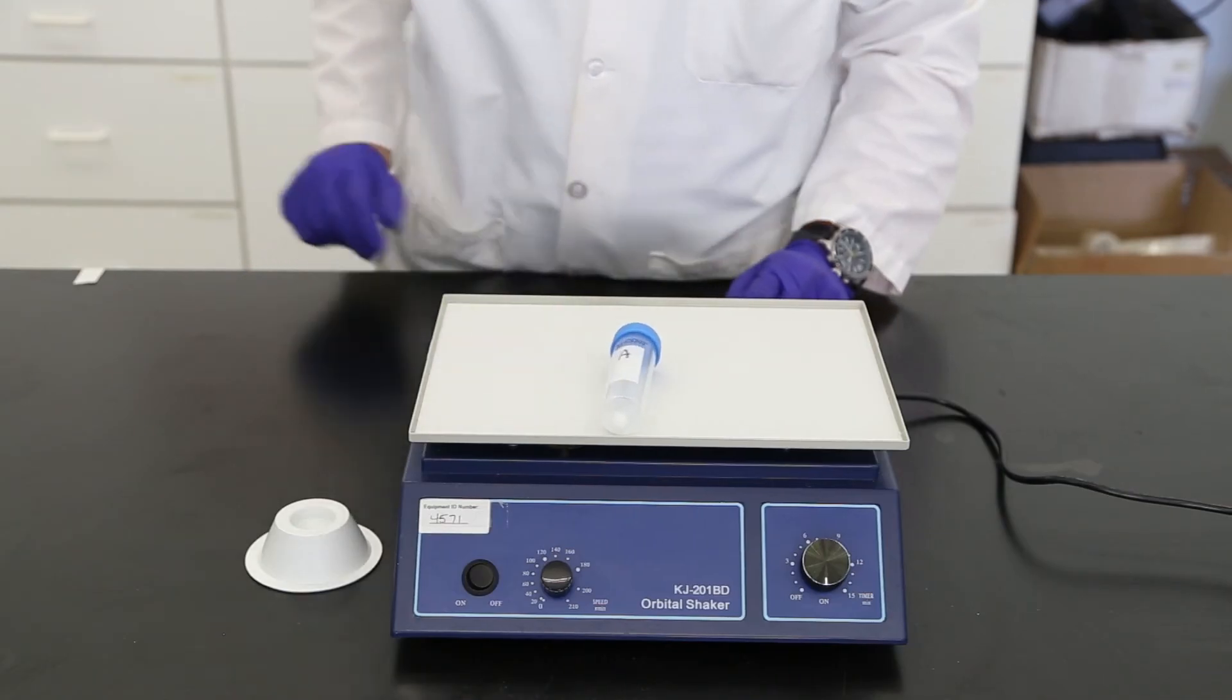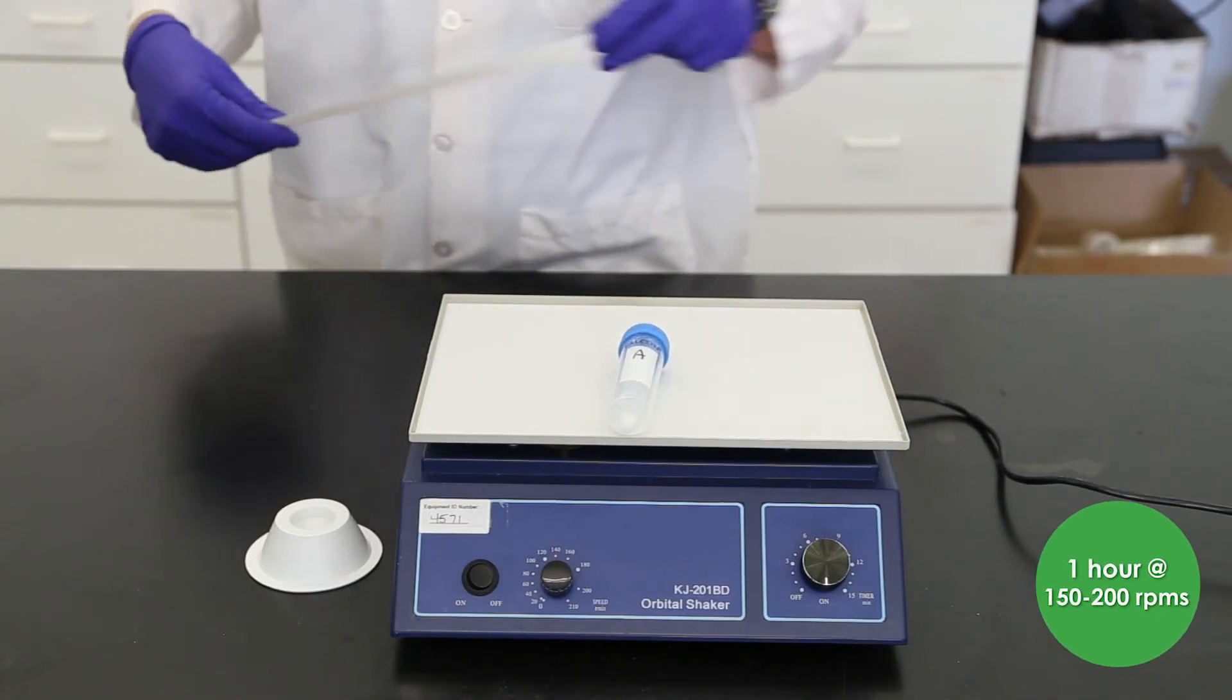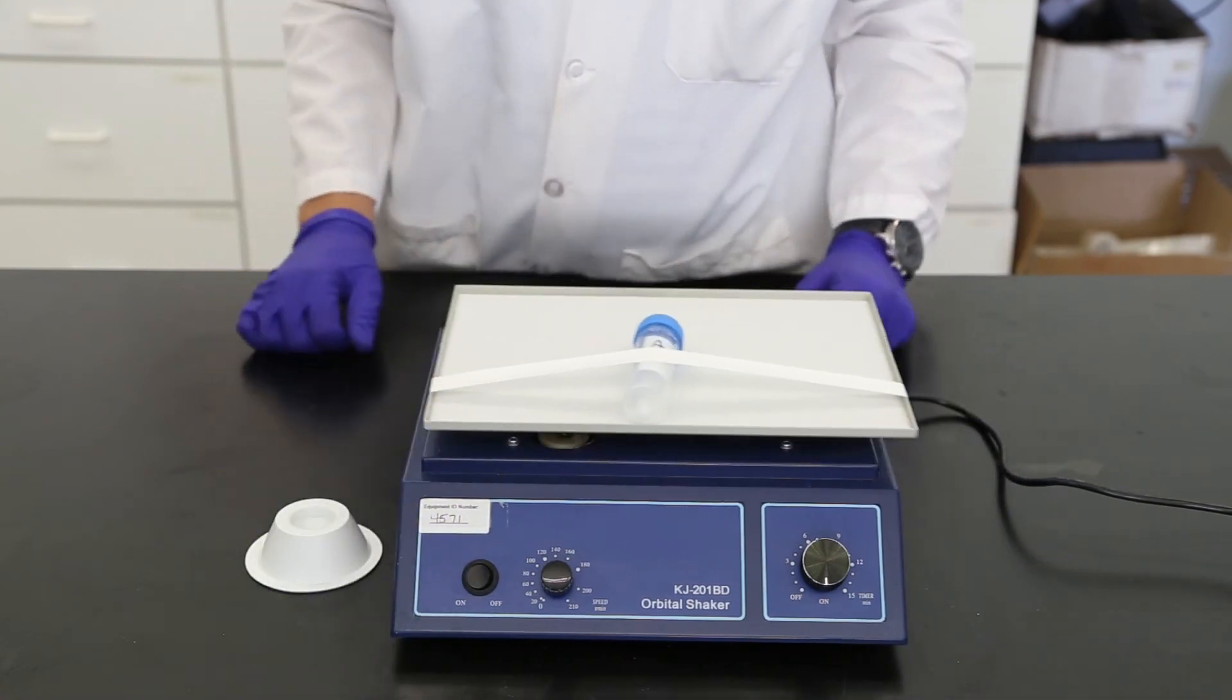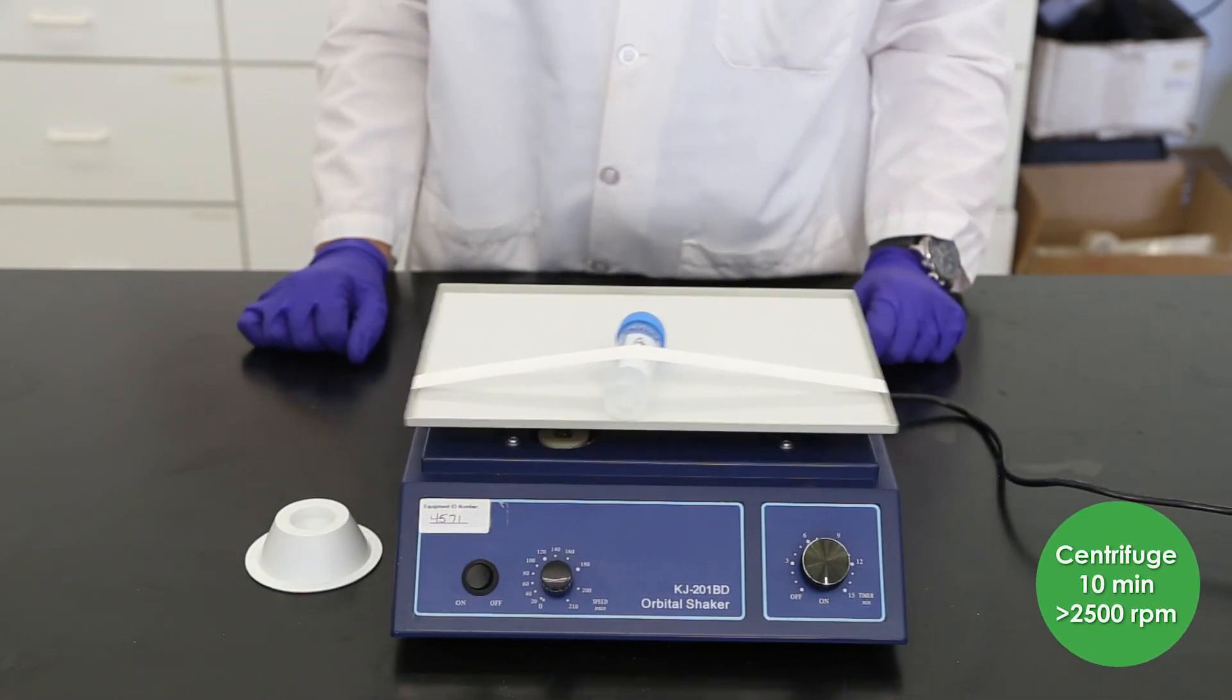Place on a rotator and shake at 150 to 200 rpm for 1 hour at room temperature. If necessary, centrifuge sample for 10 minutes.